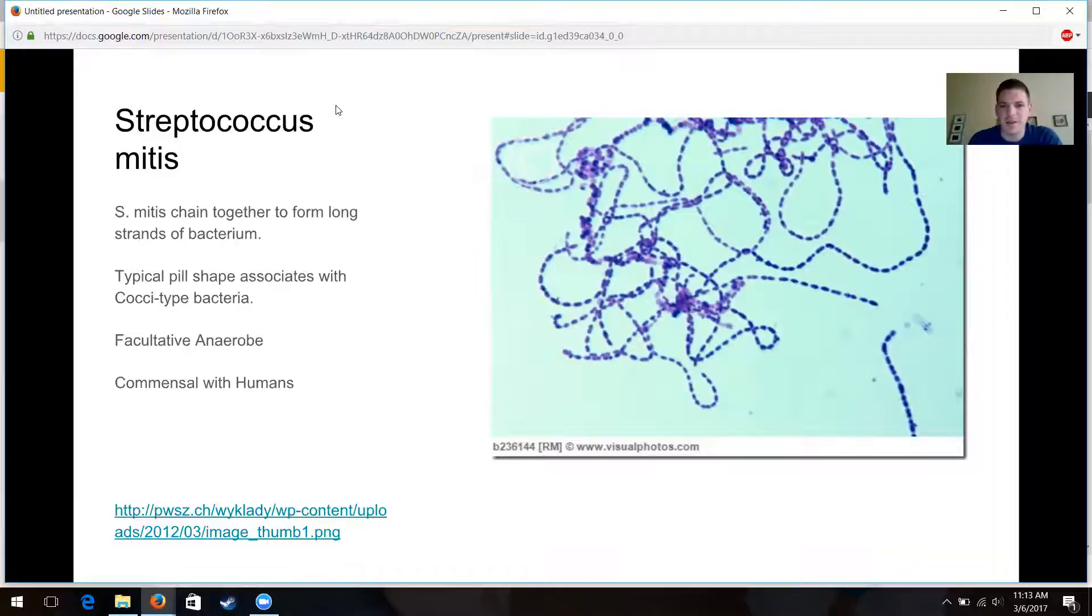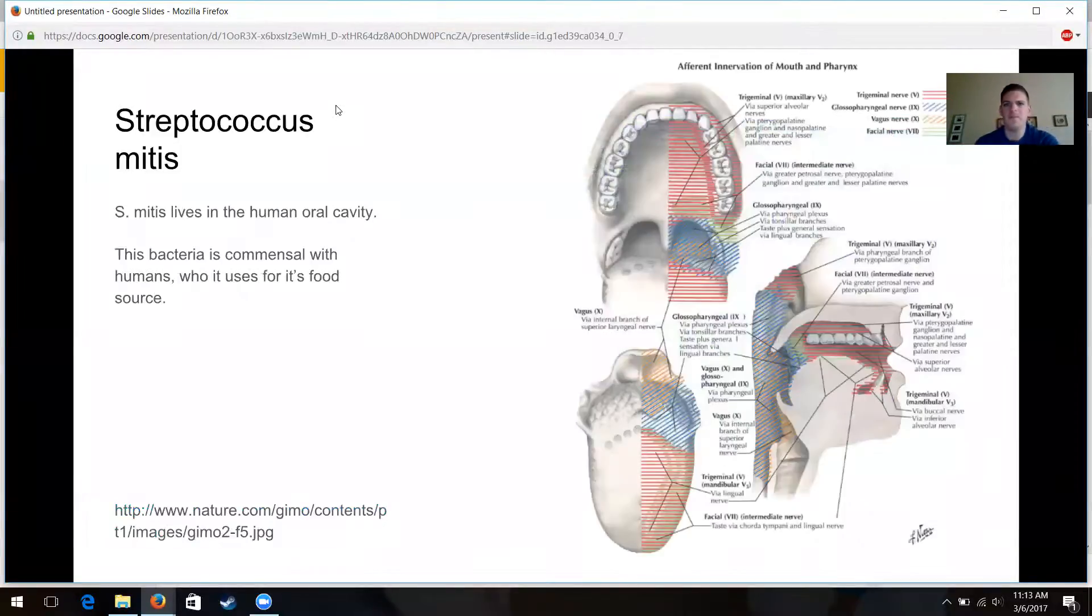That's generally what they look like. Where do they live? Streptococcus mitus live again, in all of our oral cavities in your throat, in your larynx, and in basically all of the soft tissues in your upper respiratory tract. It's commensal with humans, so it uses our food source for its food source in a mostly mutually beneficial arrangement. Although I think that they get a much better deal out of it than we do.